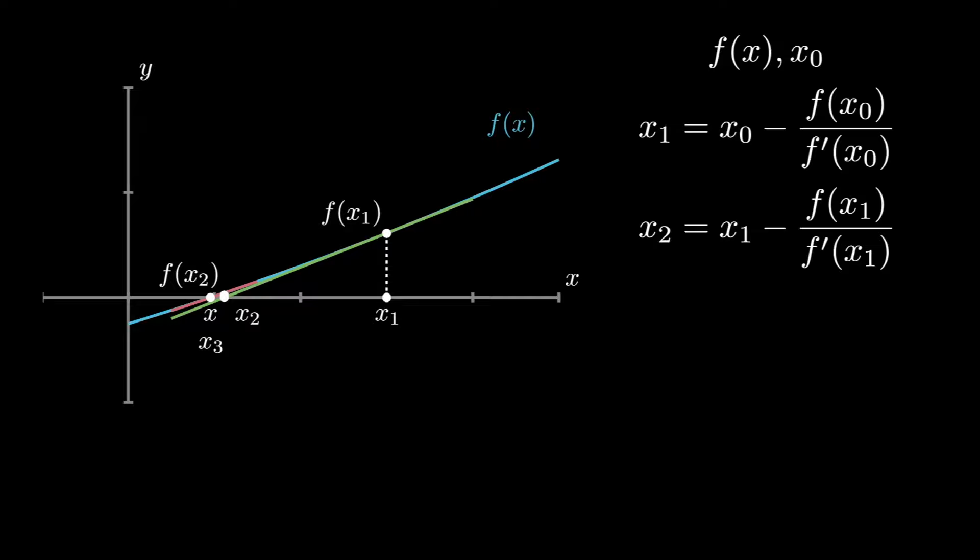Let's call this approximation as x_3. Its value is, try if you can guess what x_3 is equal to. It is x_2 minus f(x_2) over f'(x_2).